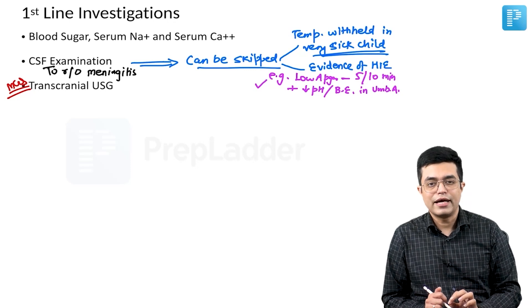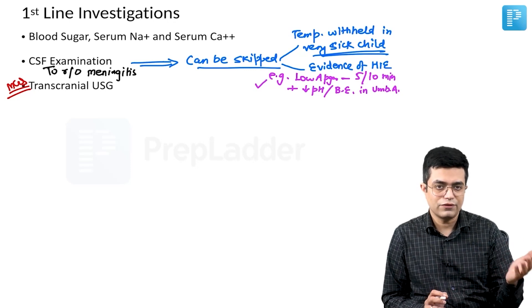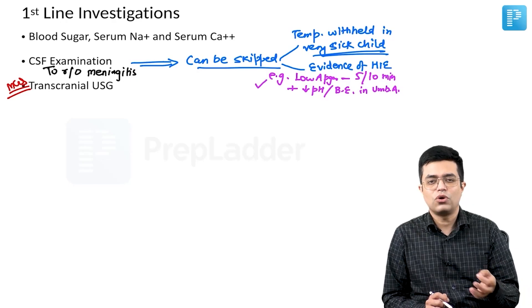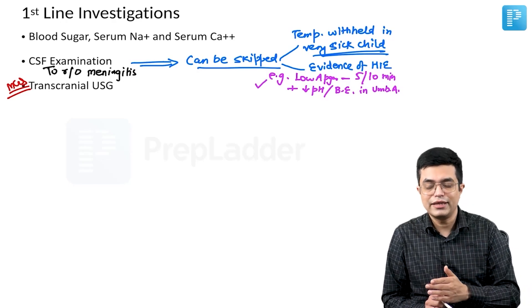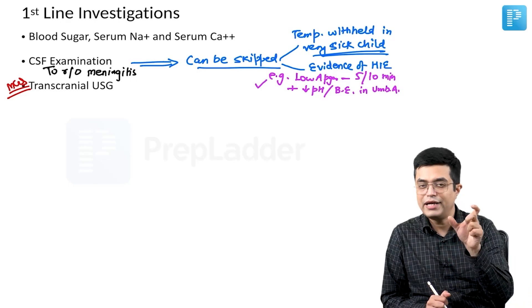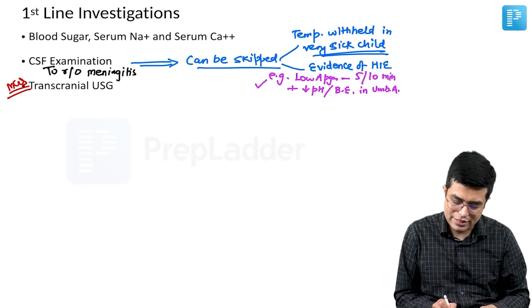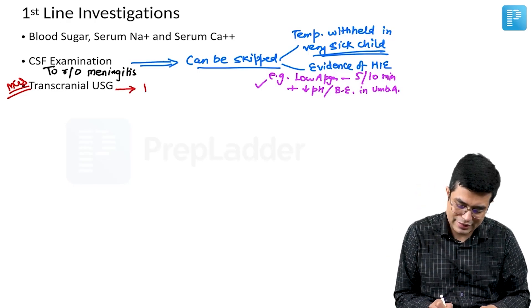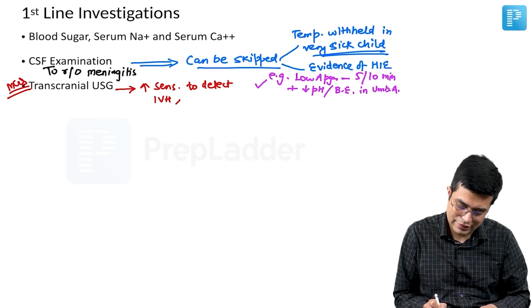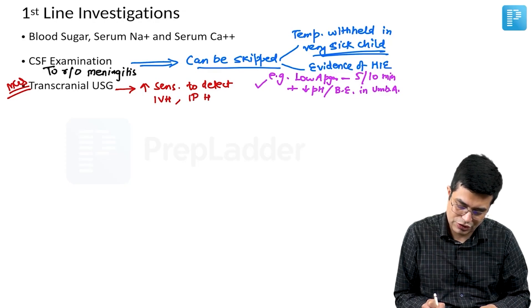Transcranial ultrasound can not only detect the presence of significant meningitis, it is non-invasive, it can be done on a bedside and particularly between day 2 to day 7, you will have intracranial hemorrhage happening and transcranial ultrasound has a high sensitivity to detect intracranial hemorrhage like IVH as well as intraparenchymal hemorrhage.